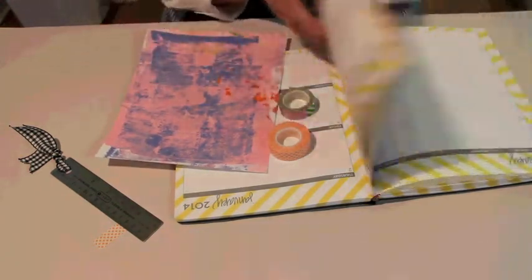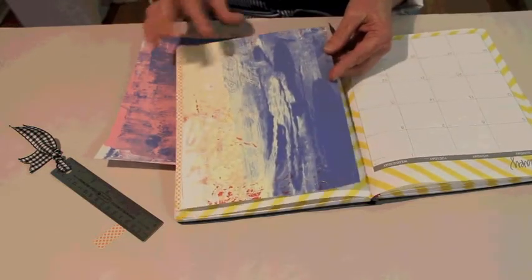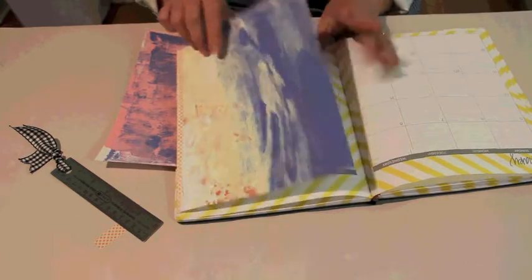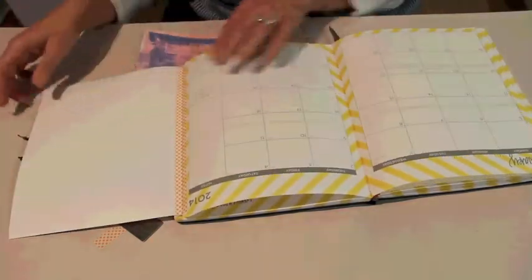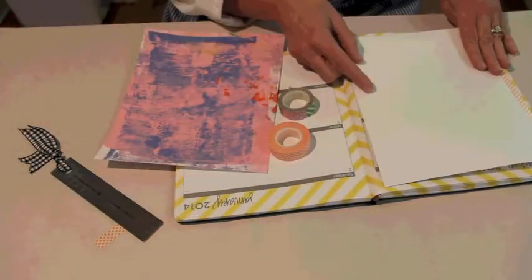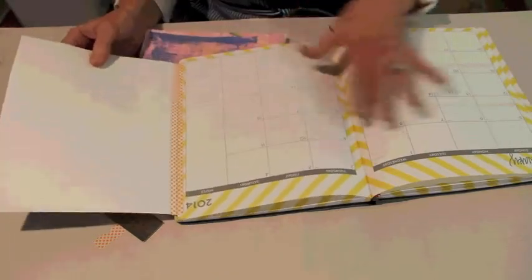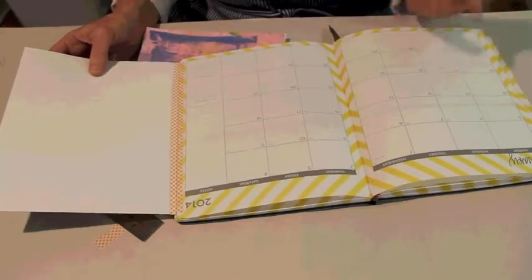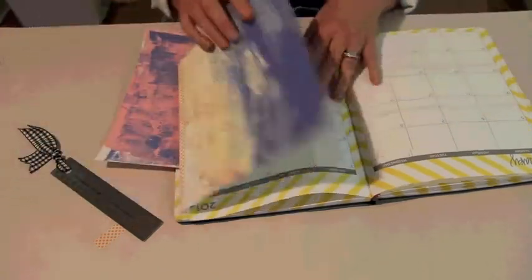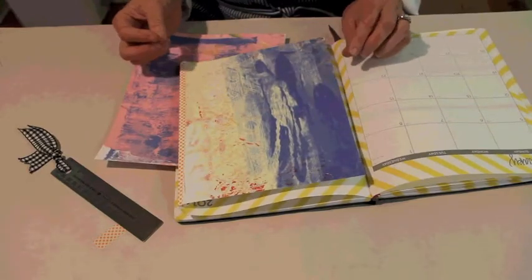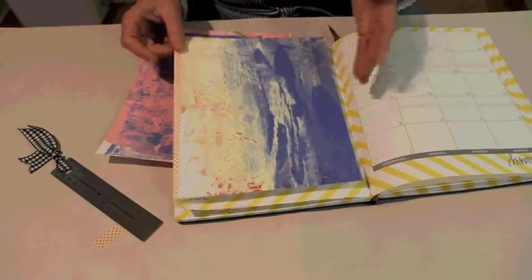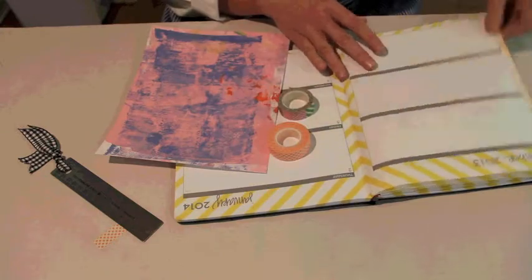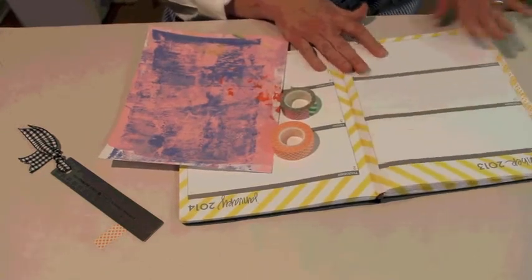You can see one that I've already done. This is one and it's put in with washi tape and it folds easily to either side, but it allows you to be able to use your planner as a planner or a diary but it also gives you some places to do some artwork. So I'm going to show you how I inserted that into the planner.